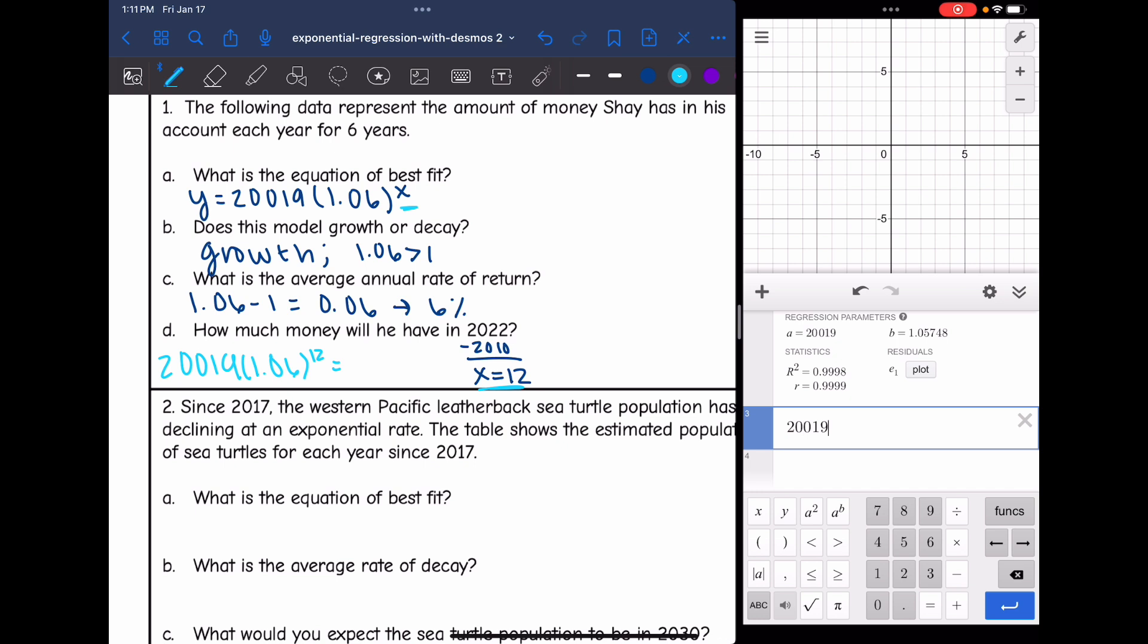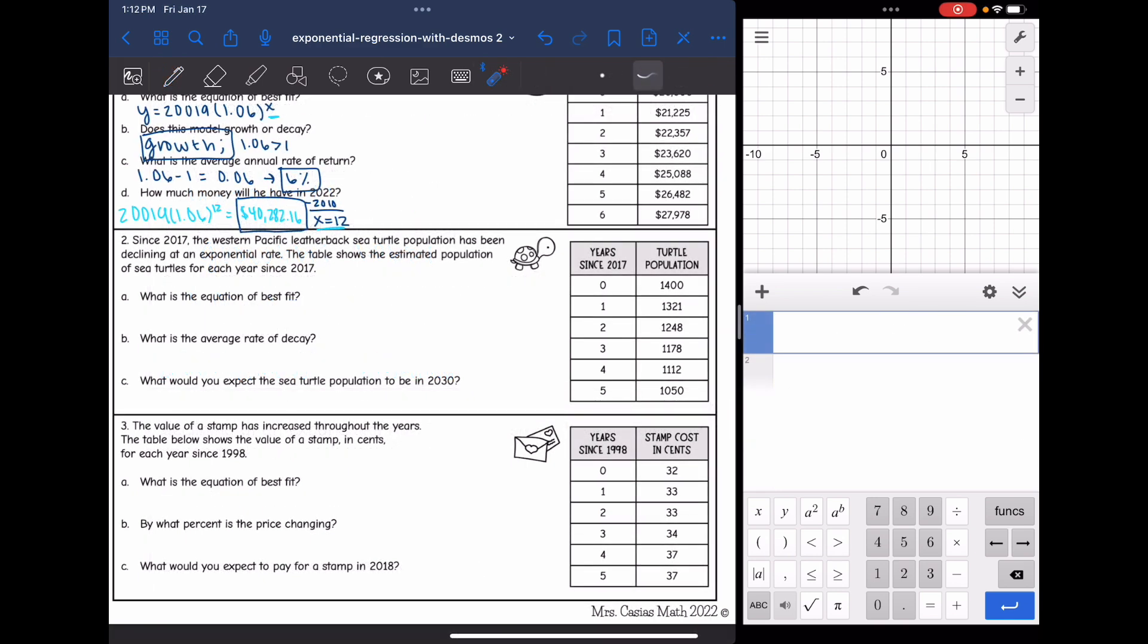I think I have an extra zero in there. Yep, times 1.06 to the 12th, and he will have about $40,282.16. All right, let's look at the next question.